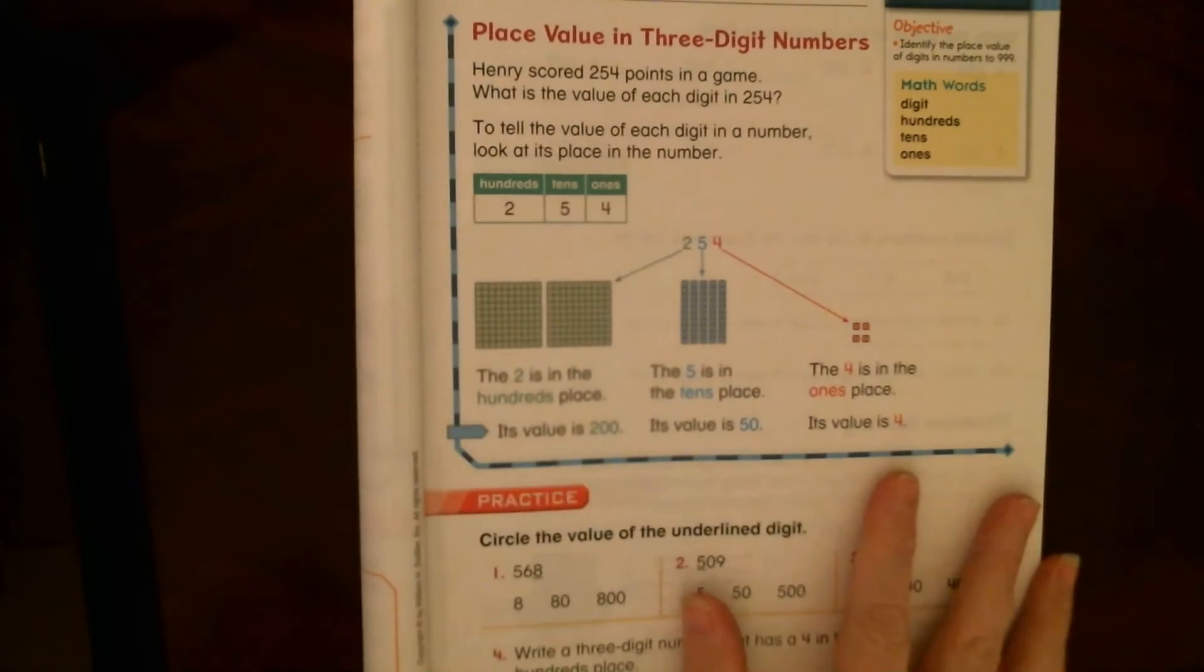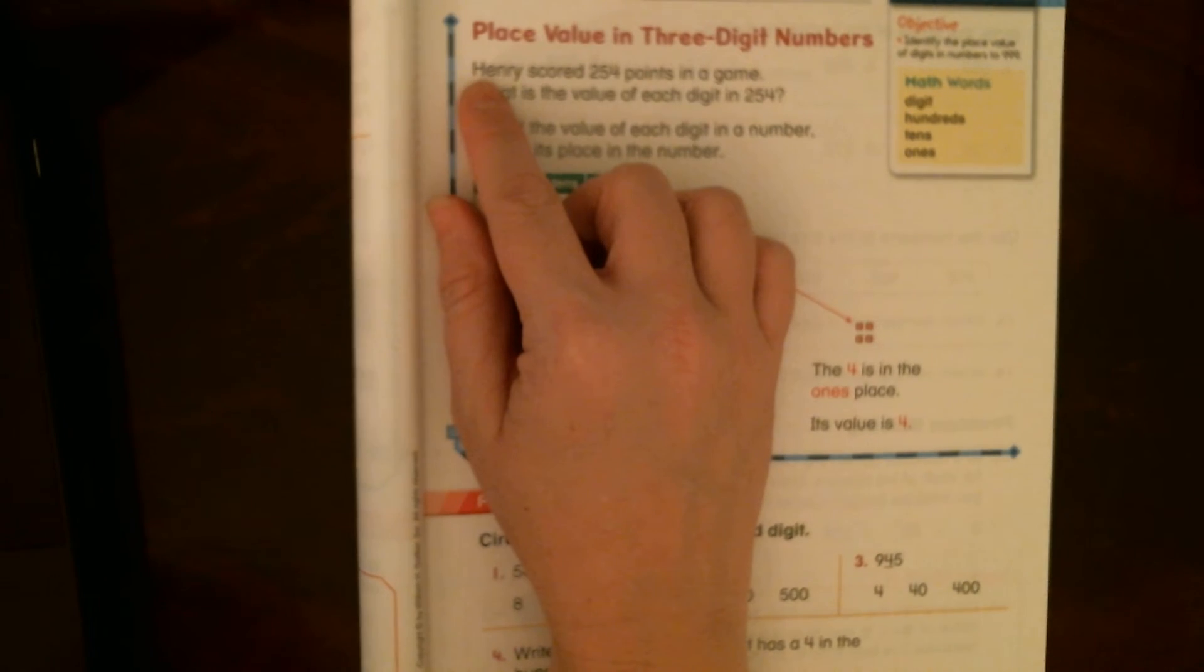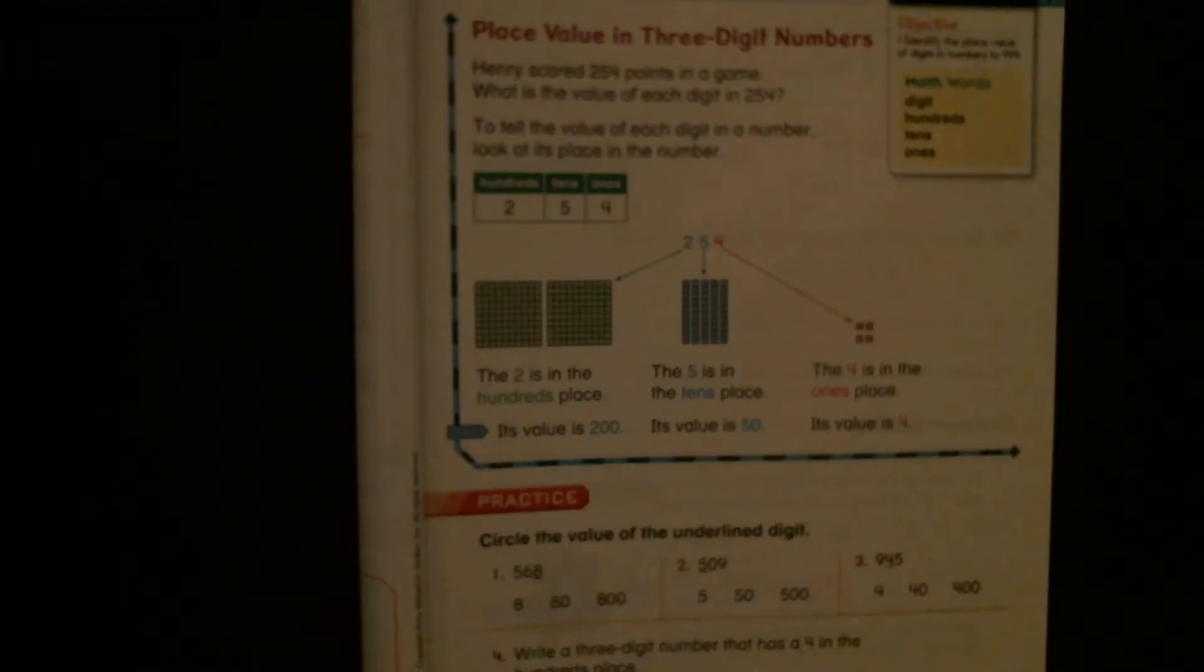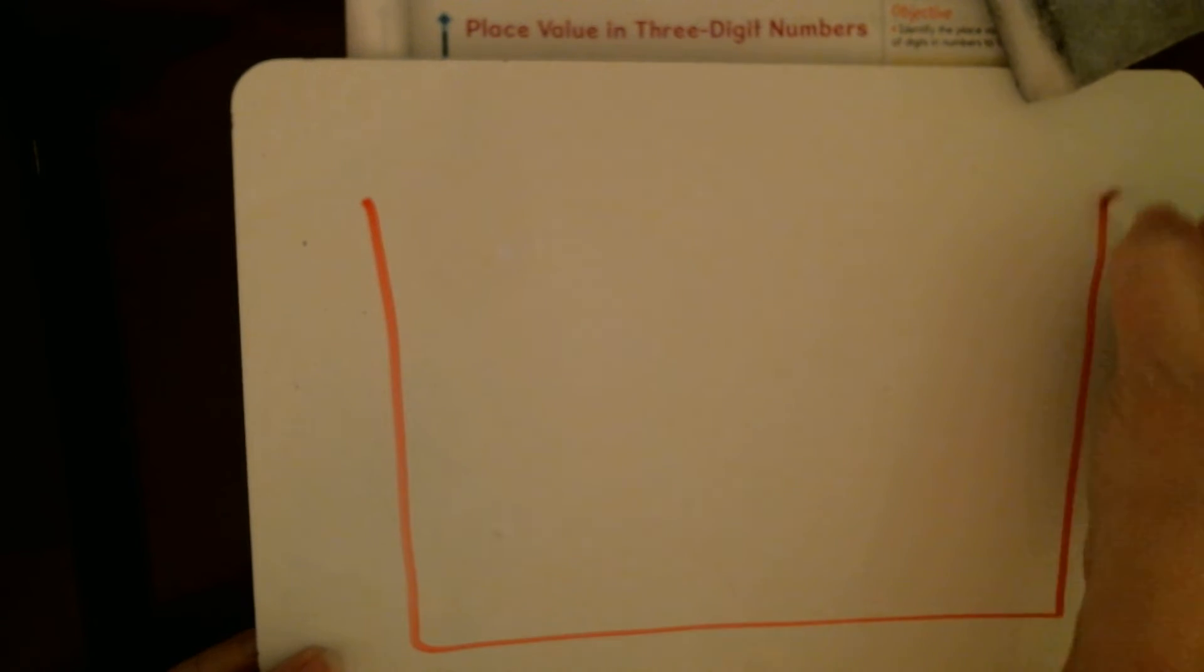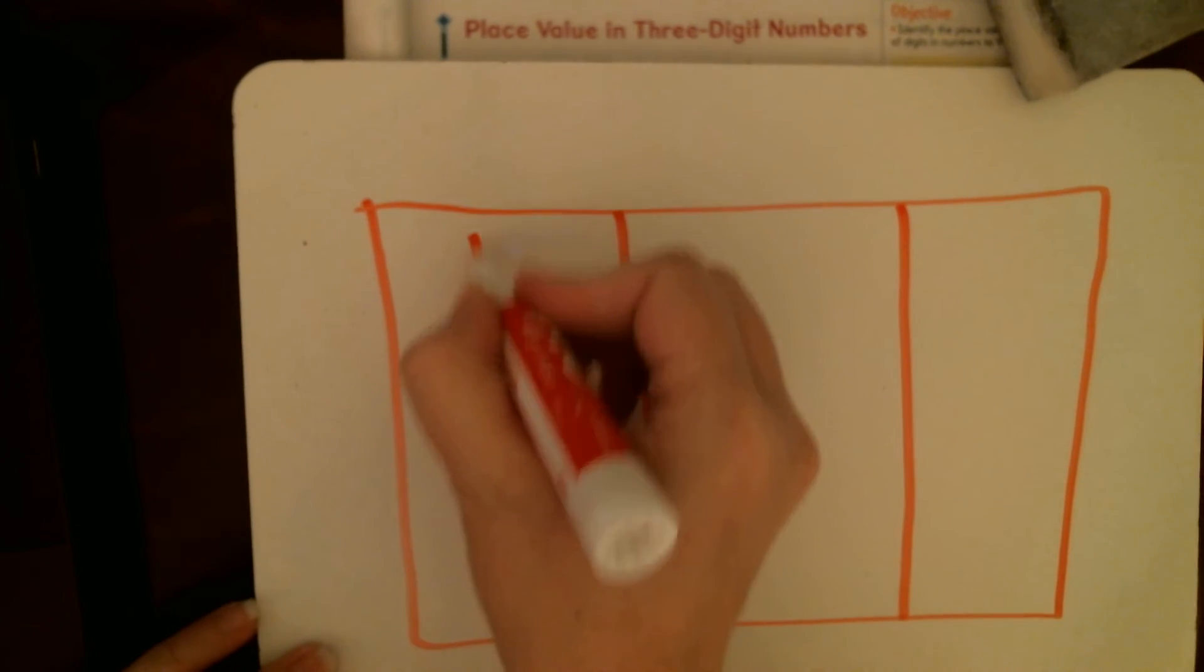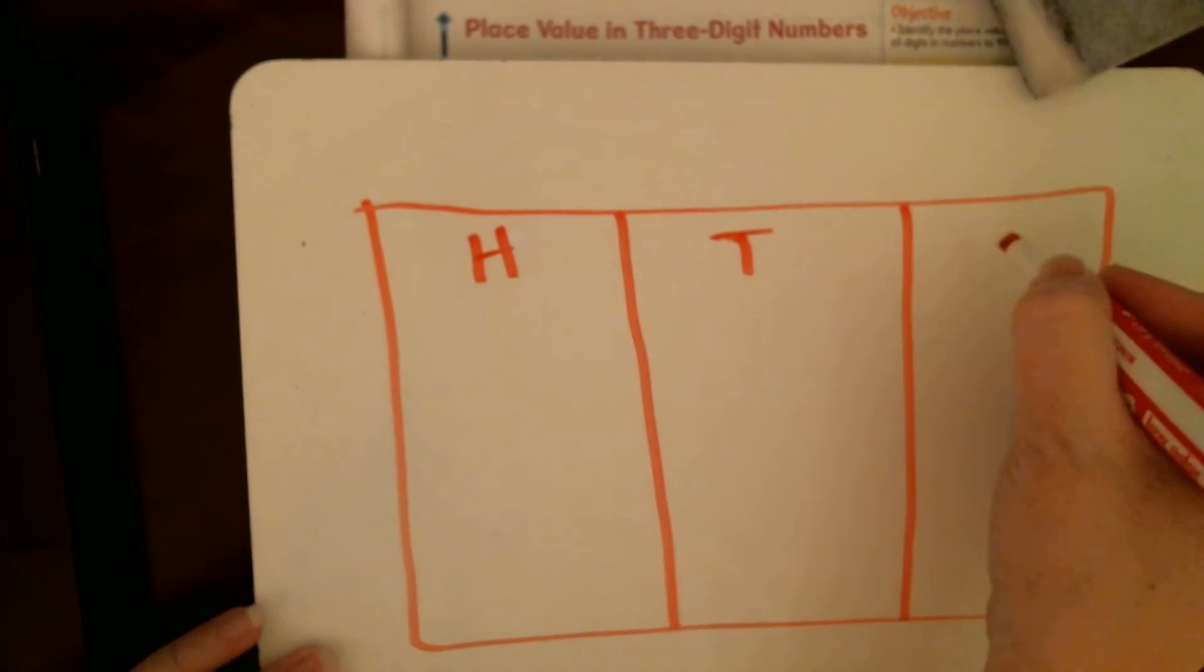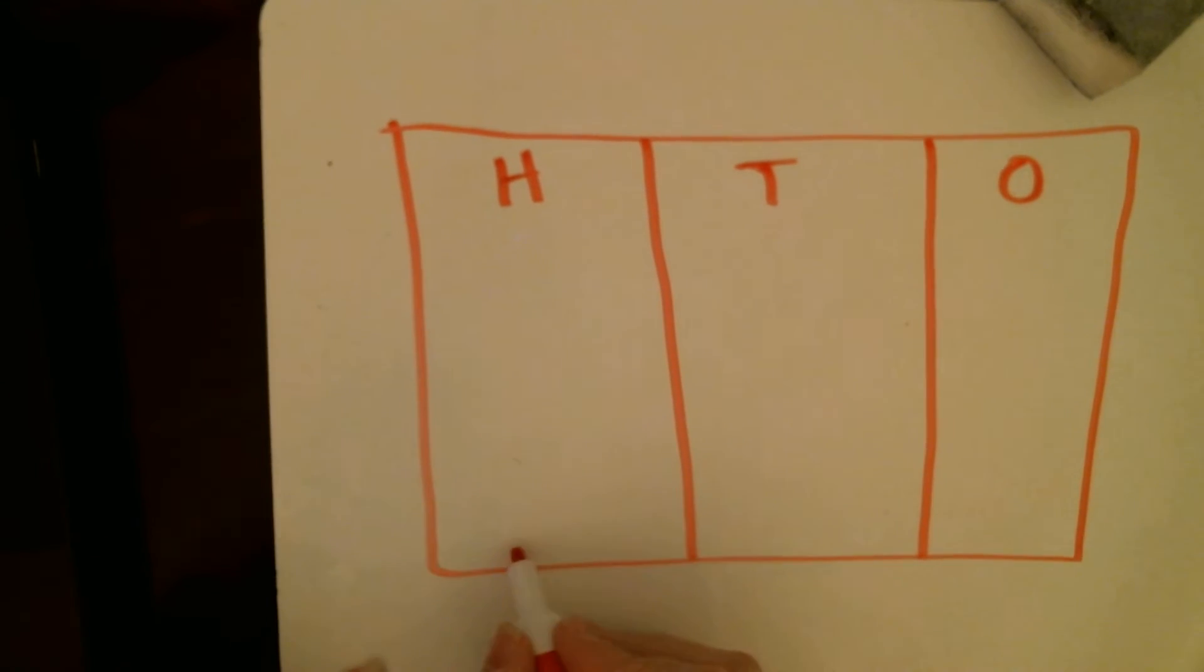Okay, so for today's lesson, you guys are going to just be thinking about where the number is, where it is on that place value chart. If you need to, if you're not really sure, you can get your whiteboard out. Draw yourself a place value model: hundreds place, tens place, ones place.